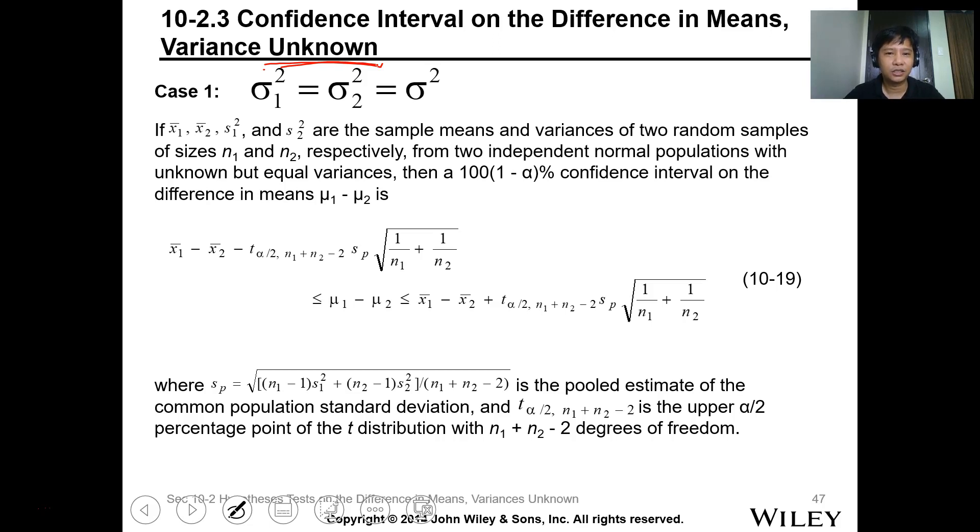So for this confidence interval, we have two cases. The first case is when the two population standard deviations or variances are assumed or known to be the same. So when they're equal, basically we'll use the t-test method for computing the mean. If we know the mean x1 and x2 and variance which is s1 squared and s2 squared of the two random samples of known size n1 and n2 for independent normal populations with unknown but equal variance, then the 100 times 1 minus alpha percent confidence interval on the difference of the mean is followed by this expression.